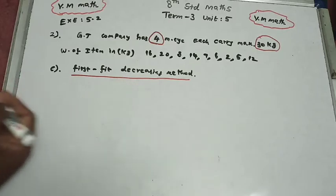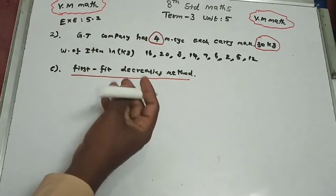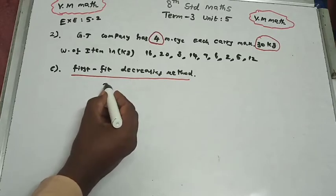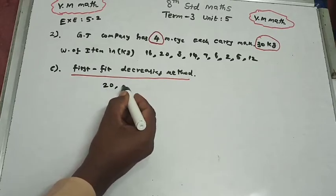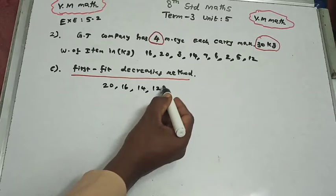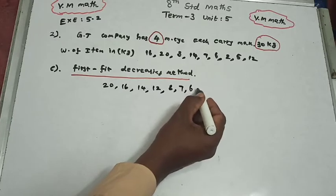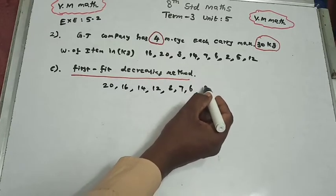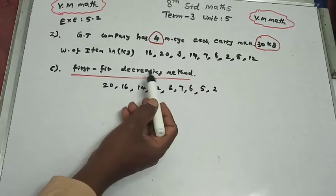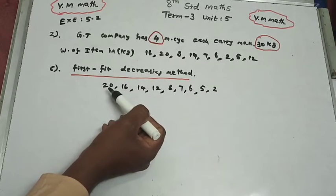This is the second method: sorting items in decreasing order from big to small. We have 9 items. Sorted order: 20, 16, 14, 12, 8, 7, 6, 5, 2. This is the decreasing order from big to small.